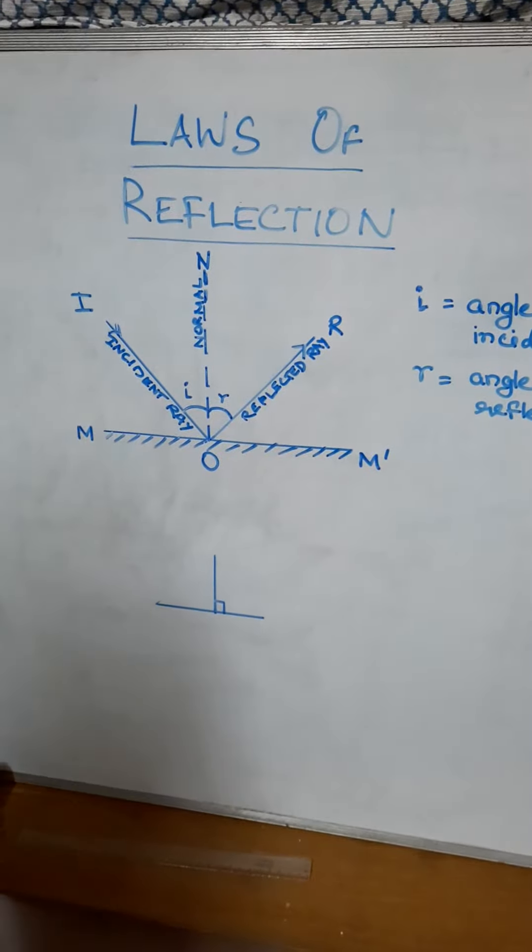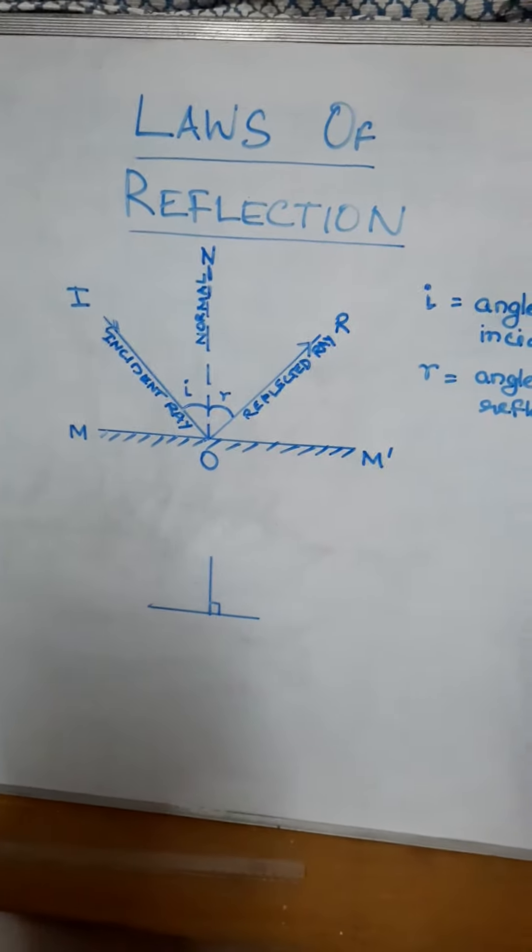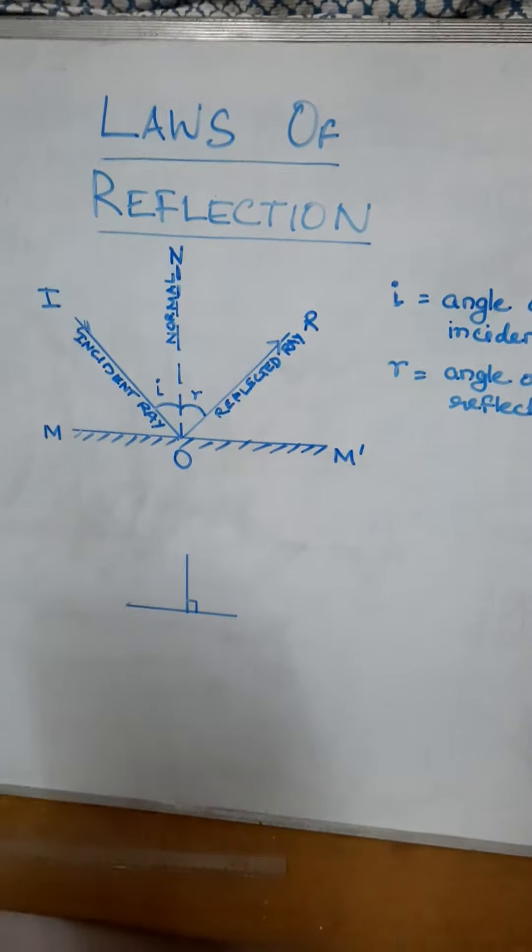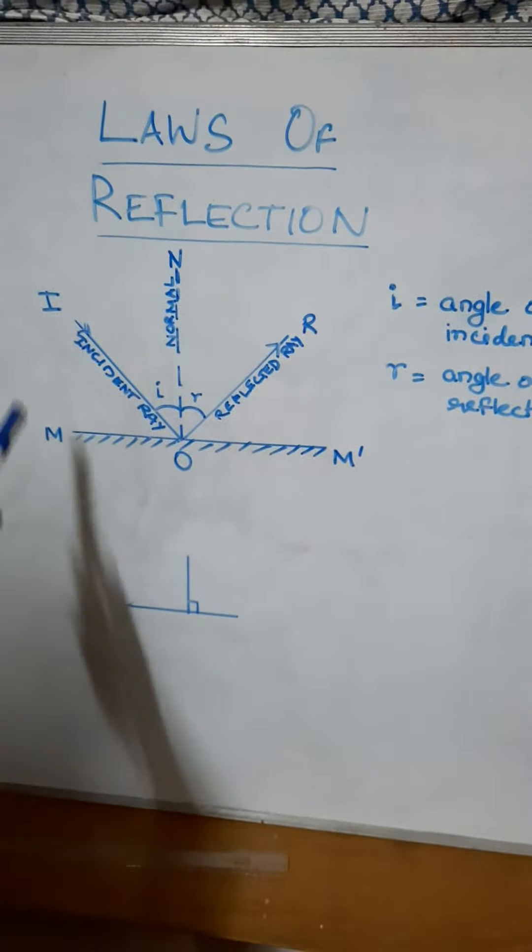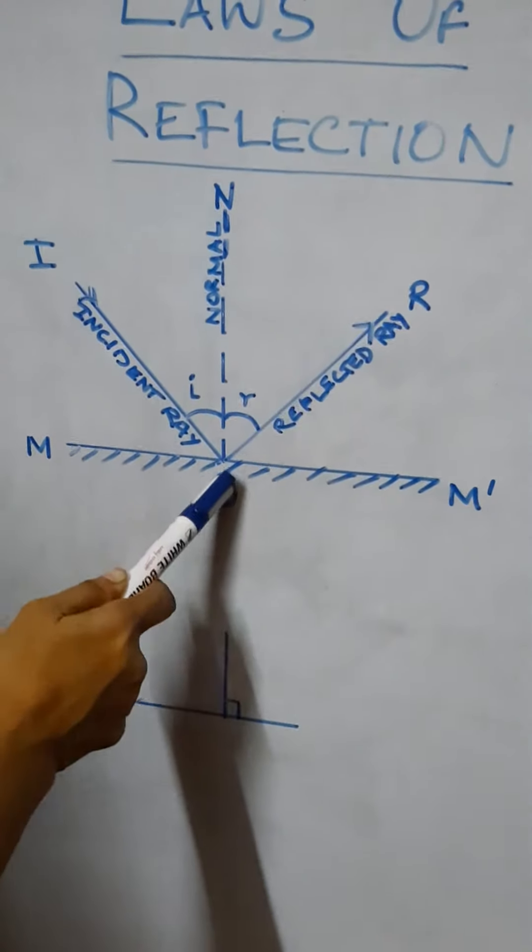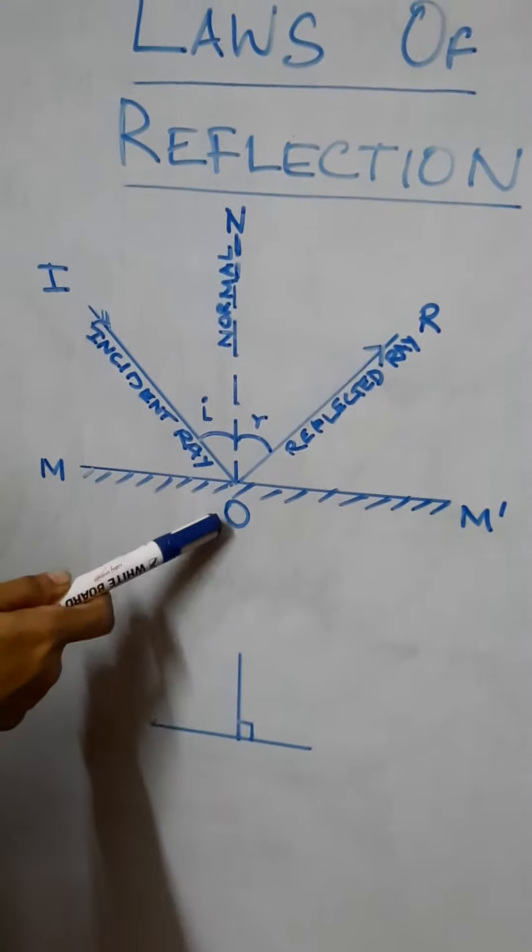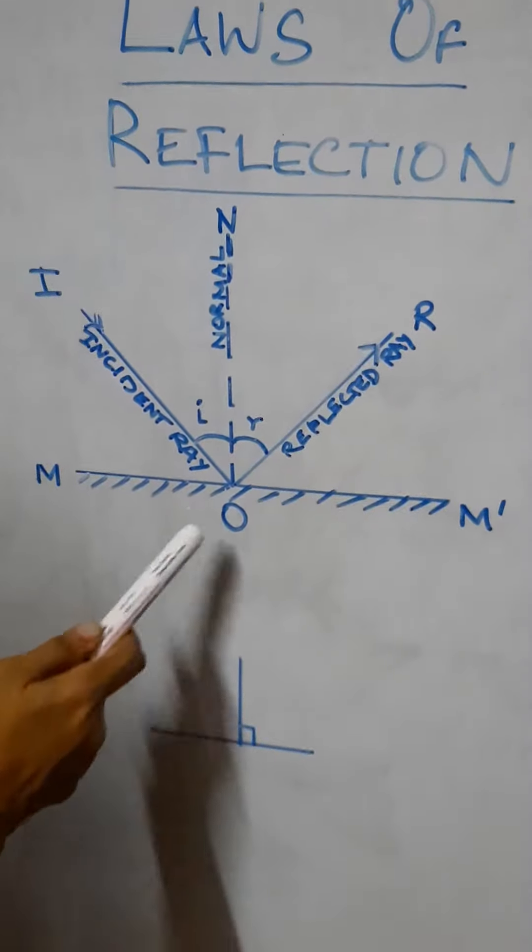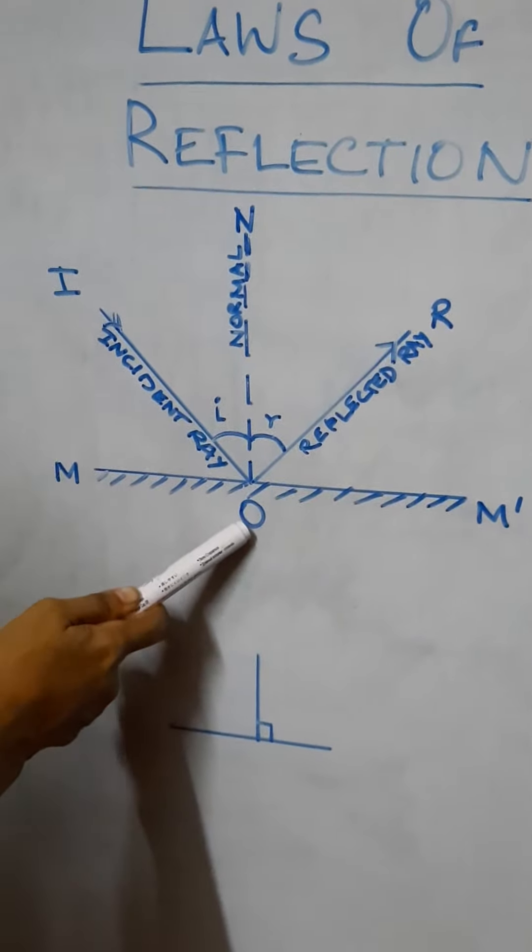Now we will revise laws of reflection. The first law of reflection: the incident ray, the reflected ray, and the normal at the point of incidence. The point of incidence out here is O.